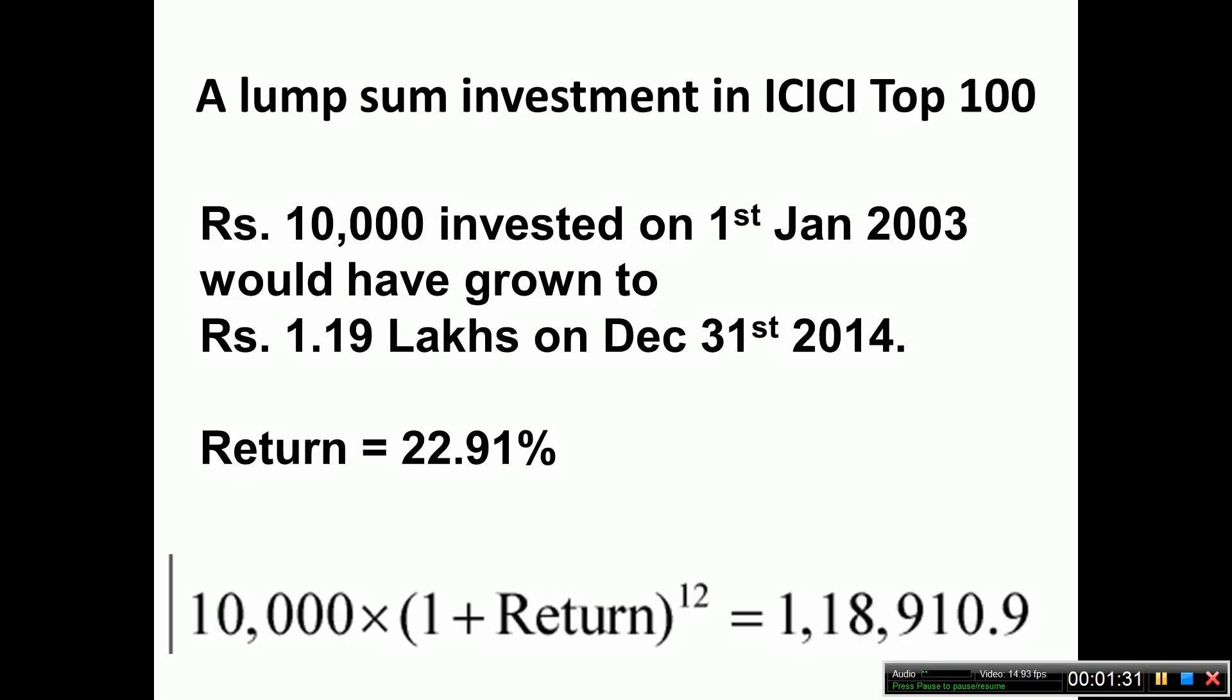Now typically this 22.91% is calculated in the following way. 10,000 into (1 + return) to the power 12 that gives you 1.18 lakhs. So to the power 12 means that (1 + return) is multiplied 12 times and 12 here represents the number of years elapsed from 1st January 2003 to end of 2014, that's 12 years.